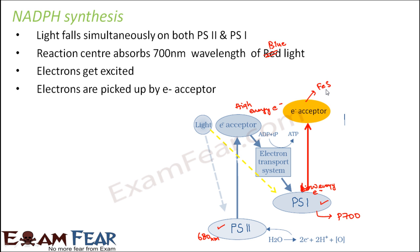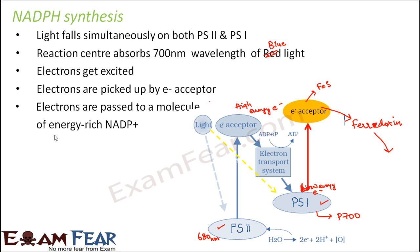This primary electron acceptor is FES — that is, iron sulfide. Once the electron reaches FES, the same process takes place: from here it passes on to many other electron carriers. The electron passes to another molecule called ferredoxin, which is another important electron carrier. From ferredoxin, it passes on to NADP+, that is nicotinamide adenine dinucleotide phosphate — a molecule which is very high in energy.